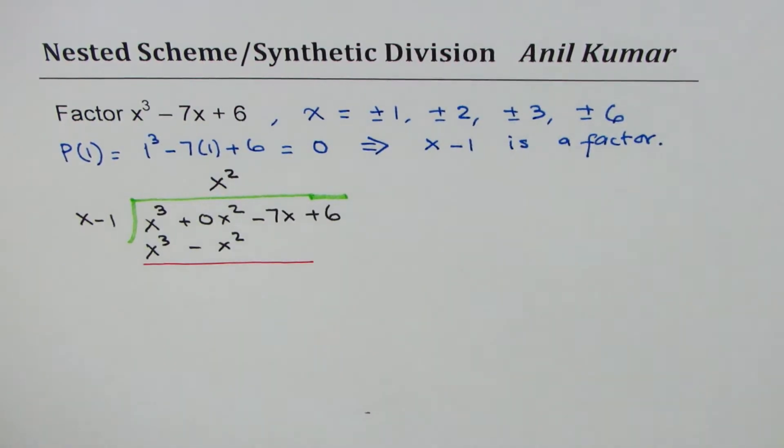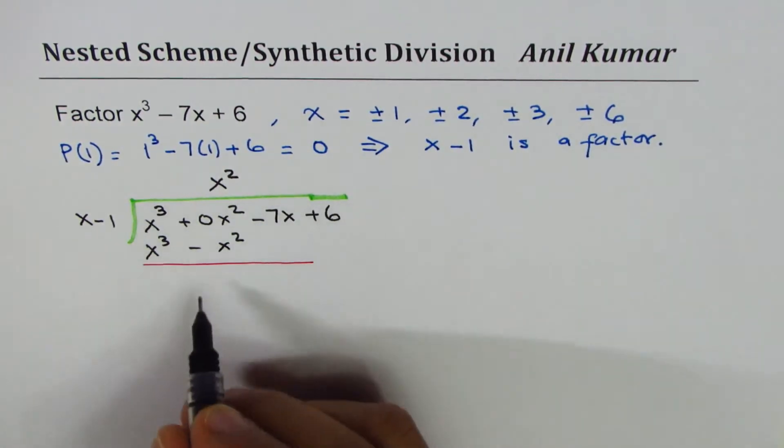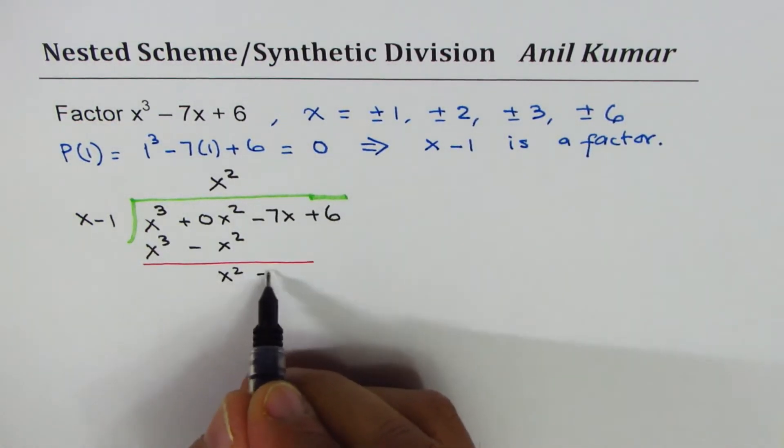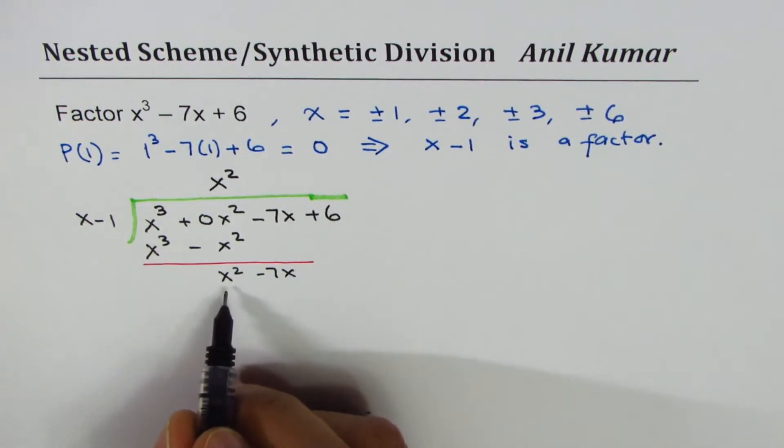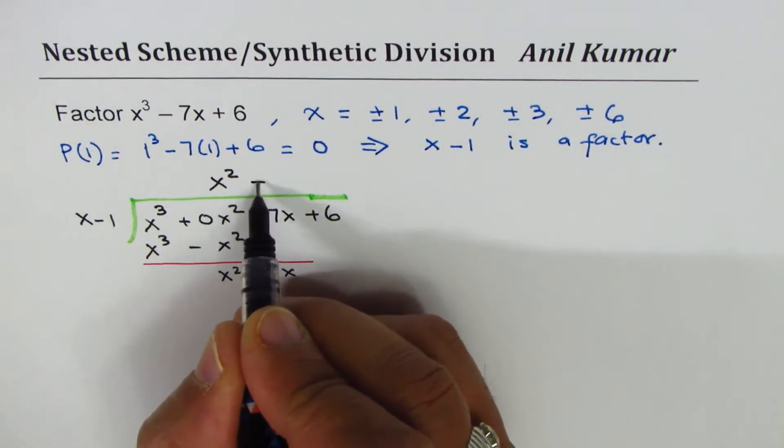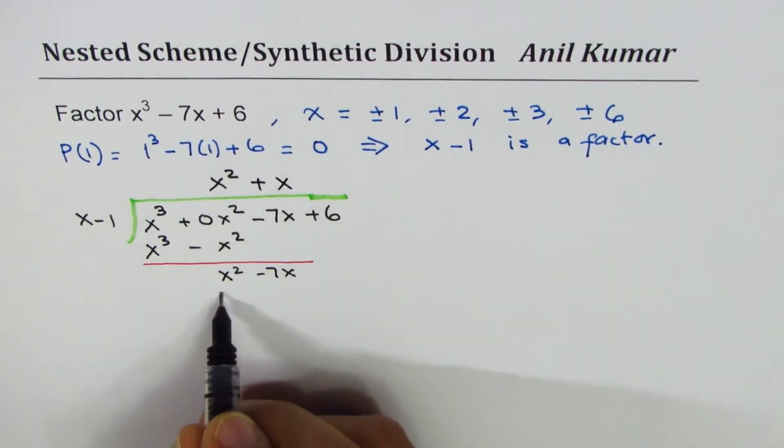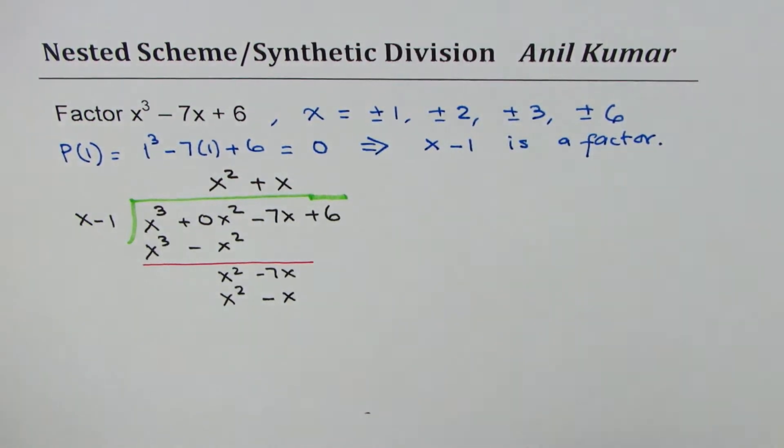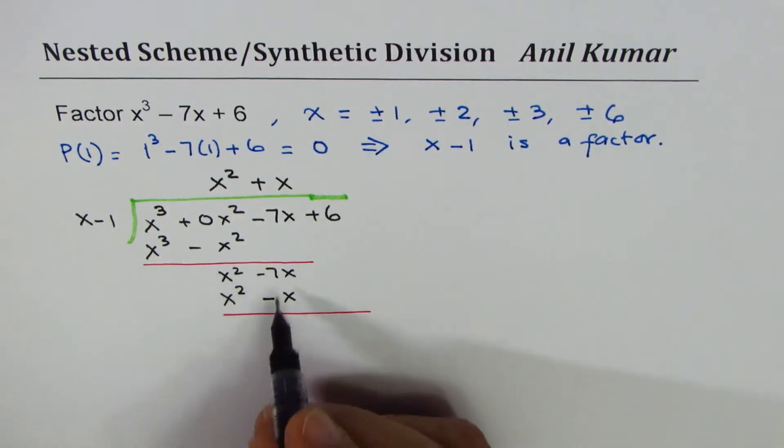Now when you take away x cube minus x square, you get x square here. Bring down minus 7x and now here the leading coefficient is 1, so we'll multiply by plus x. So we get x square minus x, and now again when you take away what you get here is minus 6x.